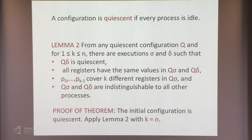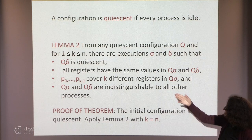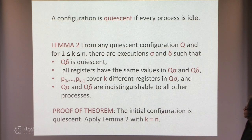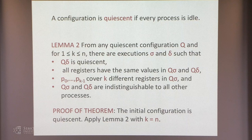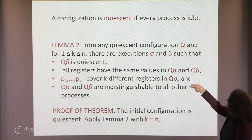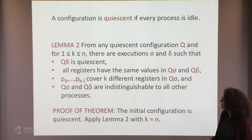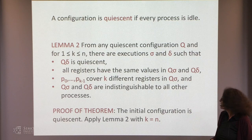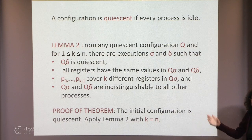The theorem says any mutual exclusion algorithm for N processes uses at least N registers. We know the initial configuration is quiescent. We apply Lemma 2 with K equals N. We get to a configuration where N processes cover N different registers, and hence we need at least N registers for our algorithm.